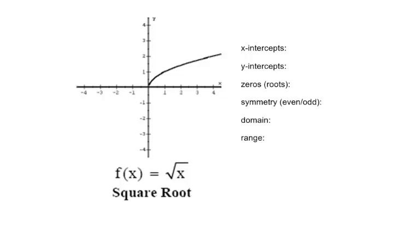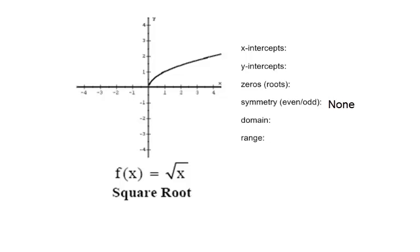f of x equals the square root of x. It has one and only one x-intercept — that's x equals zero. It has only one y-intercept — that's y equals zero. It has no symmetry; it's neither even nor odd. It is not a reflection over the y-axis and not symmetric about the point of origin.